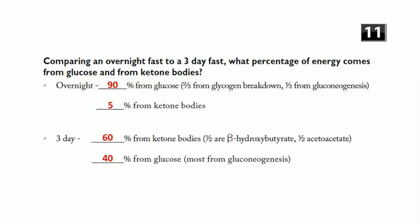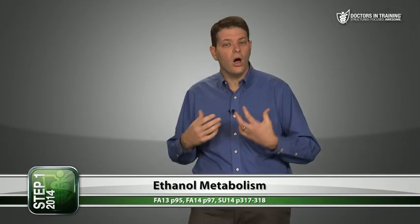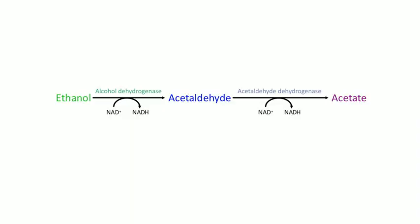Ethanol can also be used as an energy substrate. From the drug metabolism video: alcohol dehydrogenase converts ethanol to acetaldehyde, and then acetaldehyde dehydrogenase converts acetaldehyde to acetate, which can ultimately be used to make acetyl-CoA. Importantly, both of these reactions generate NADH.